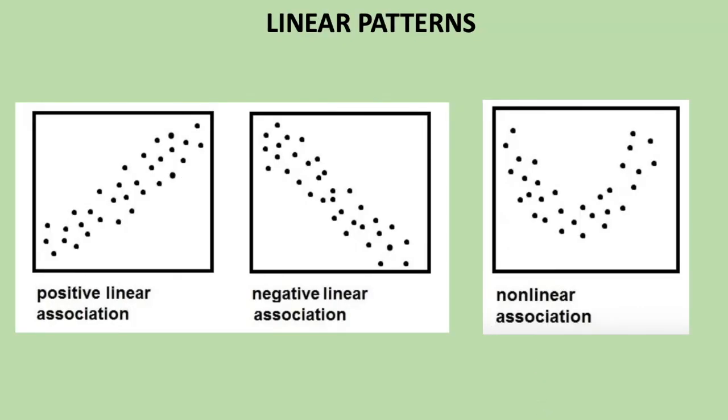Graphs can also show different kinds of patterns. In what we saw before, we saw positive and negative correlations. We didn't talk about what kind of pattern they were. In these two graphs, the patterns are linear.